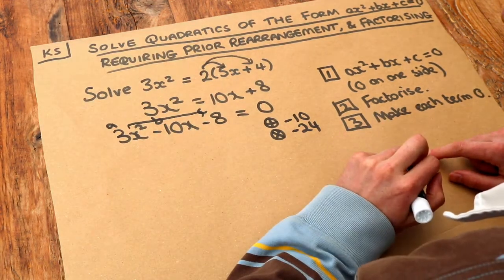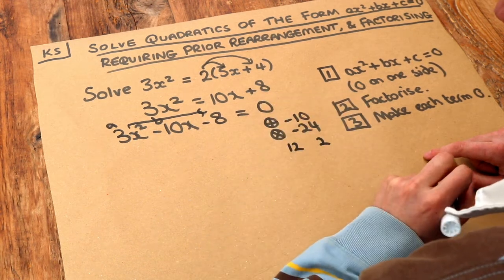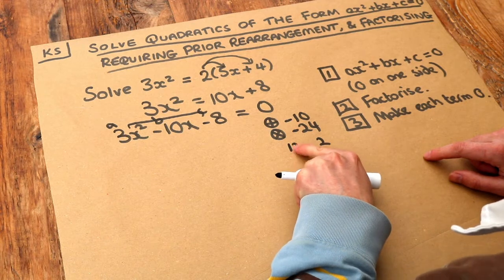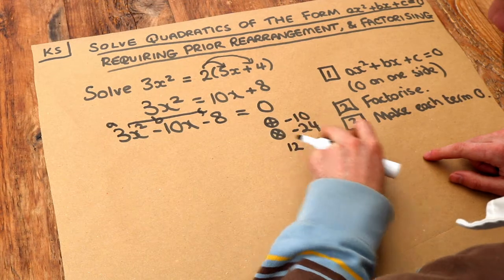Well, let's think of numbers that multiply to give 24. Well, 12 and 2 multiply to give 24, except one of them has to be negative to multiply to give a negative number. And these somehow combine to make minus 10 to add or subtract, don't they?